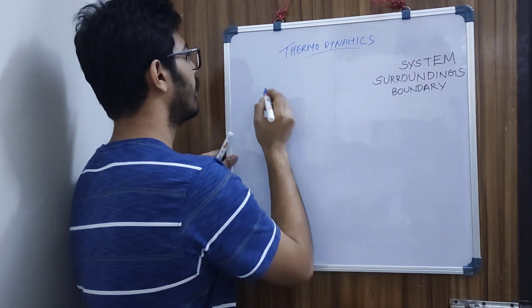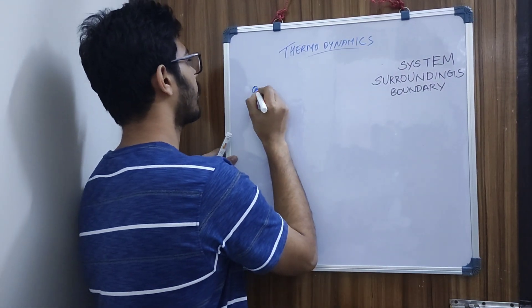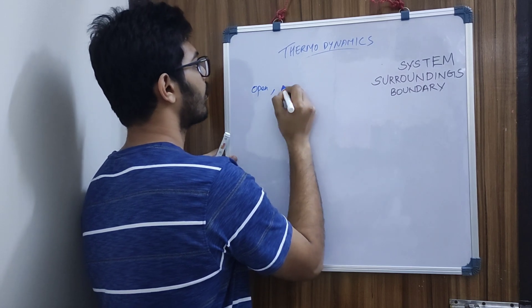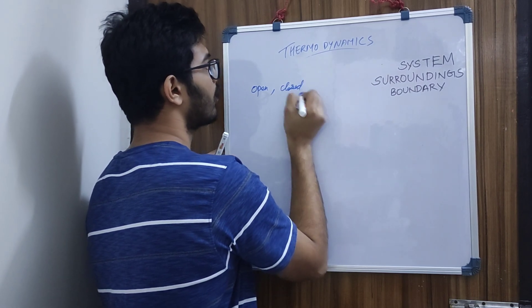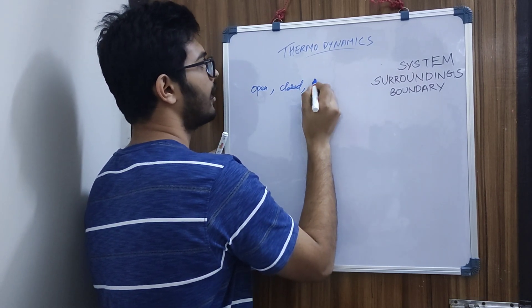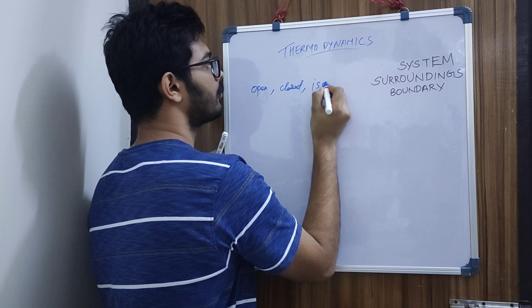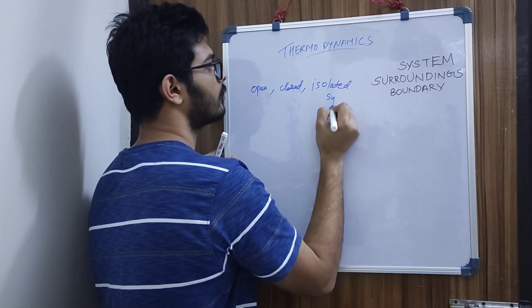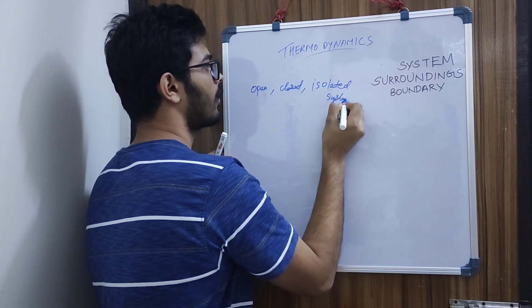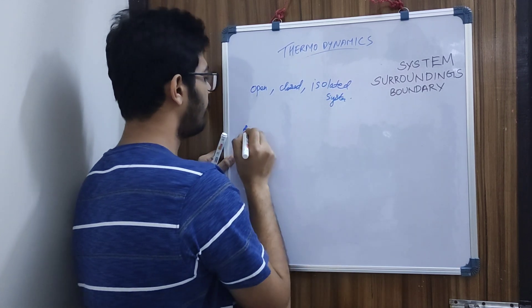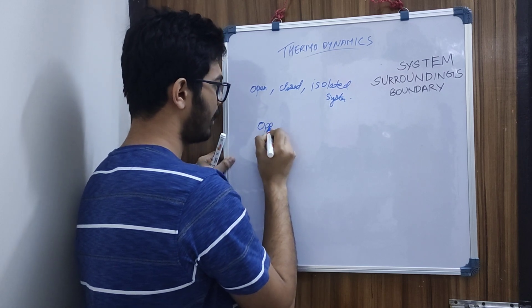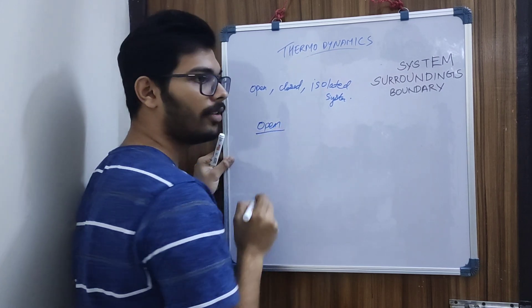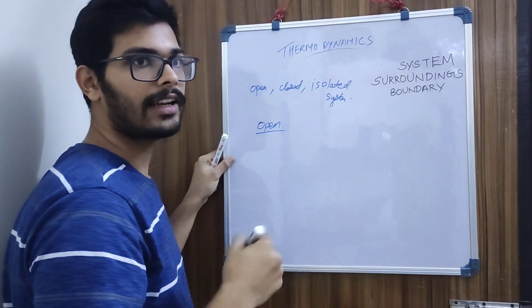There are three types of systems: open system, closed system, and isolated system. An open system involves both mass flow and energy flow.